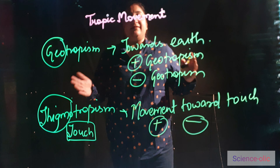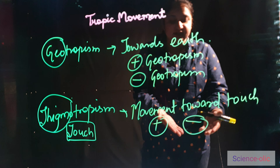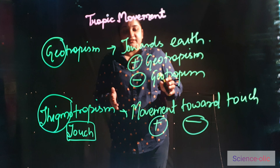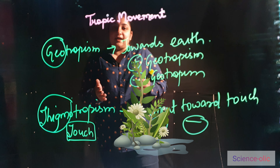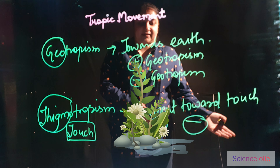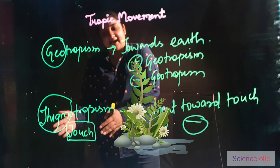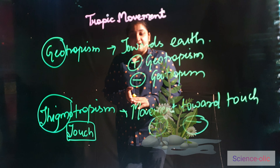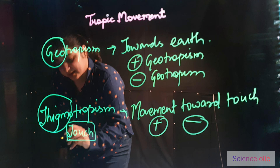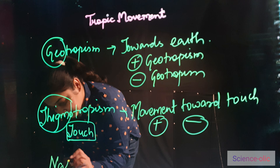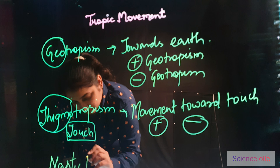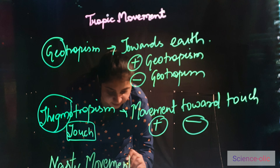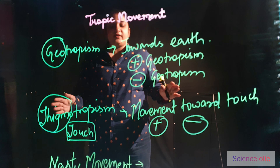Thigmotropism is also positive and negative. When a plant moves towards the touch it is positive, and when it moves away from the touch it is negative. For example, suppose a root touches a surface and moves in the opposite direction — that is negative thigmotropism.